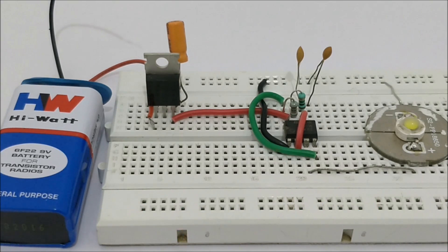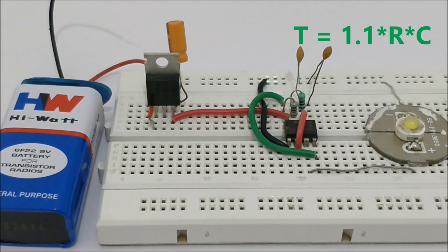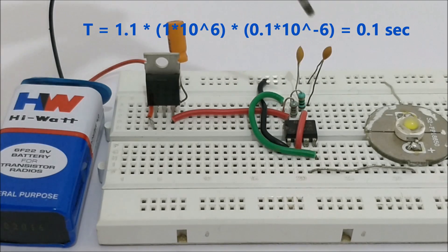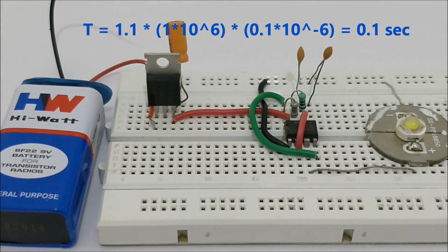This time duration is calculated by using the formula T equals 1.1 into R into C. So the resistor and the capacitor value used in this project decides the delay value of the circuit. Here we have a capacitor which is 0.1 microfarad and here I have a 1 megaohm resistor. These two in combination will give us a delay of 0.1 seconds.